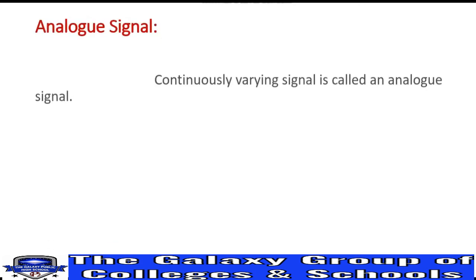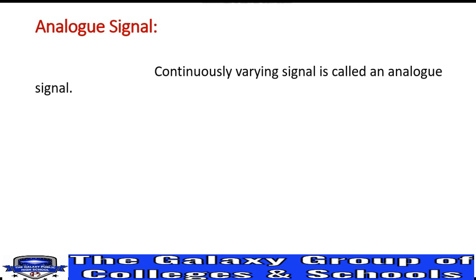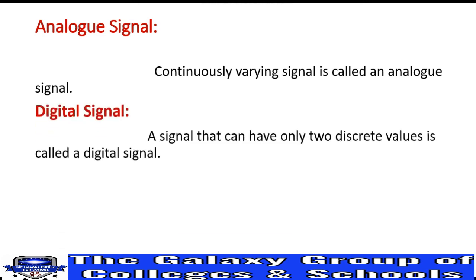What is an analog signal? An analog signal is a continuously varying signal. Since we know analog quantities have continuously varying values, we name a continuously varying signal an analog signal. What is a digital signal? A digital signal is one that can have two discrete values — such as voltage being maximum or minimum, a light bulb being on or off, or a value being true or false. A signal with two discrete values is called a digital signal.